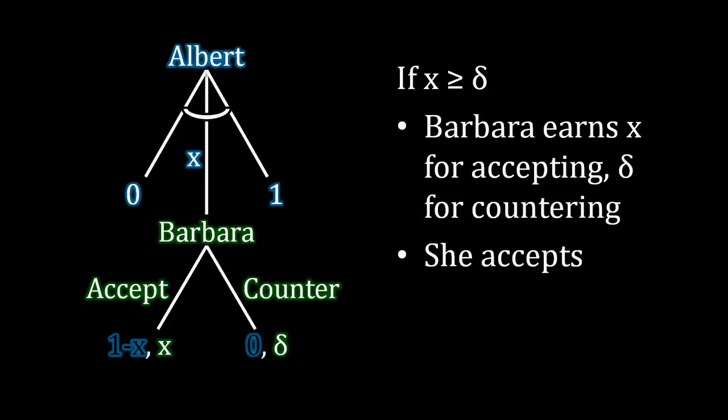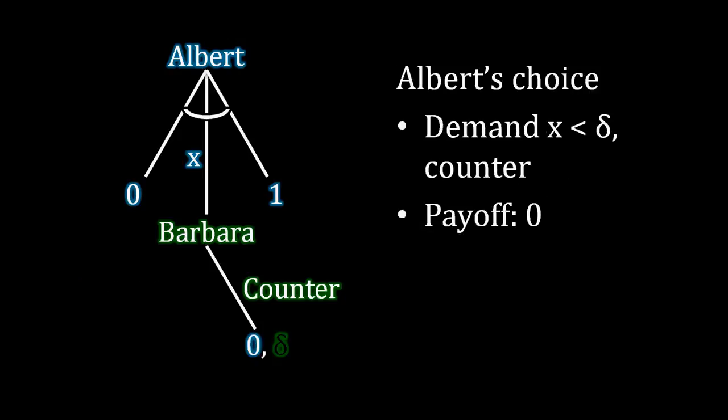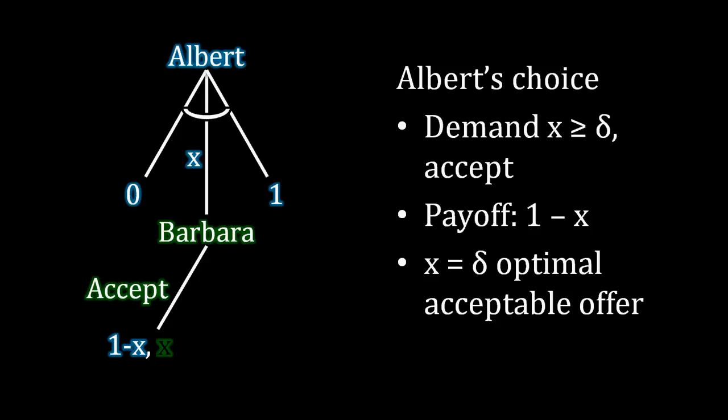Now we need to think about which one is better for Albert. Well, if Albert demands less than delta, Barbara is going to counter, and that's going to leave a payoff of 0 for Albert, which is very bad for Albert. So it's very clear here that Albert is not going to be making an offer that Barbara is going to reject.